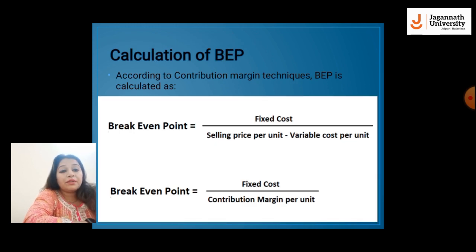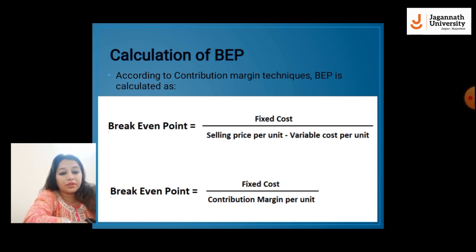Next, how to calculate break-even point. According to the contribution margin technique, break-even point is equal to fixed cost upon selling price per unit minus variable cost per unit. Selling price per unit minus variable cost per unit is the contribution margin per unit.